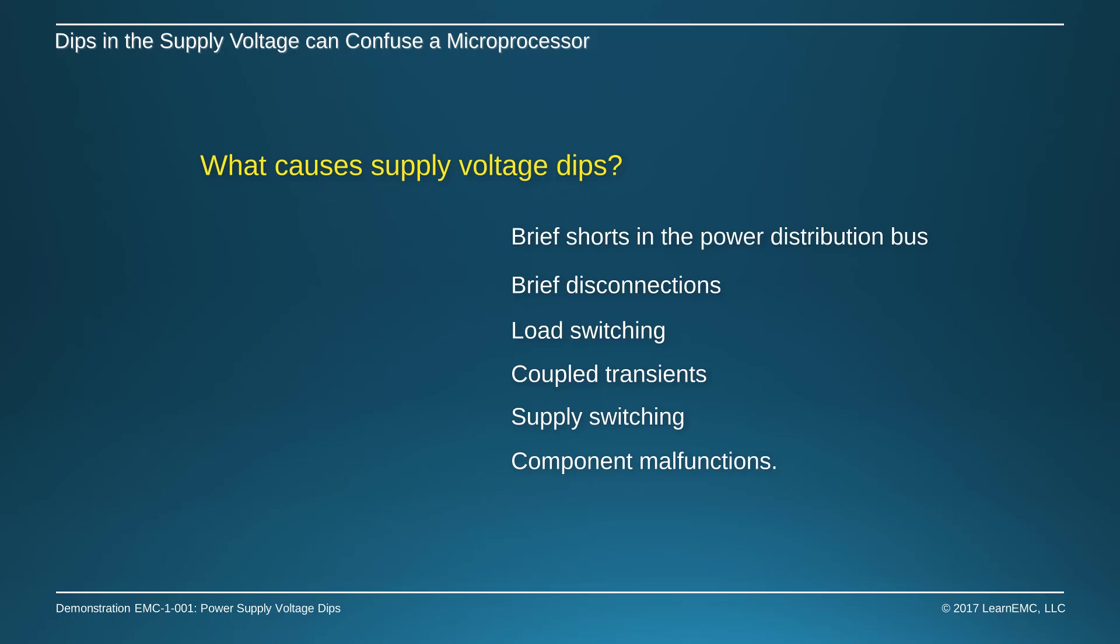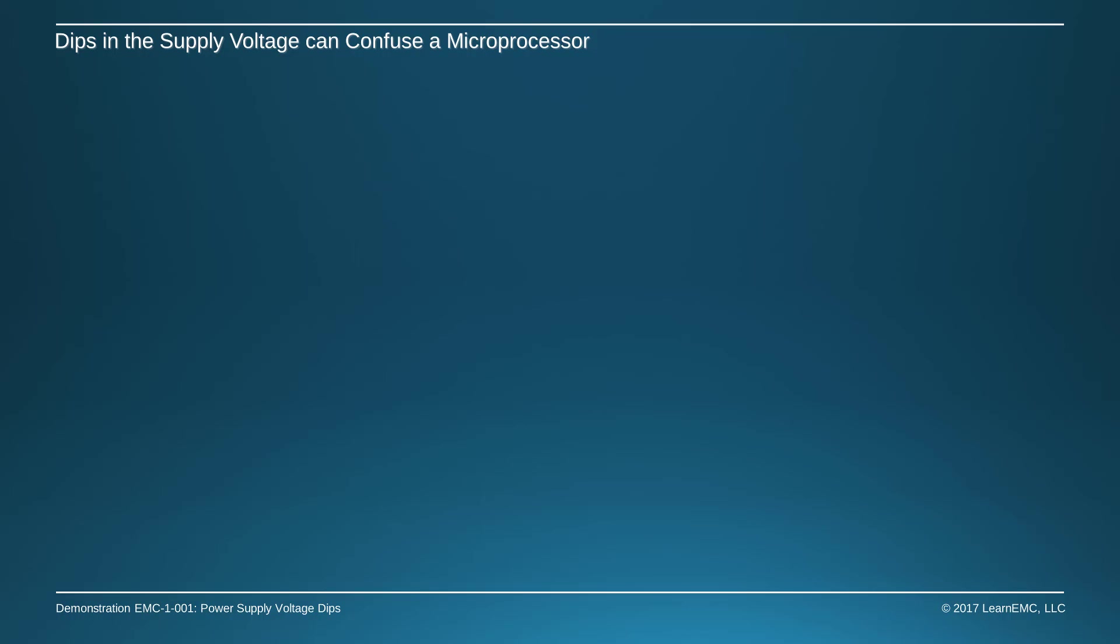We can reduce the probability of power supply voltage dips by providing adequate decoupling and battery backups, but these measures can't ensure that a processor will never experience a dip in the supply voltage.